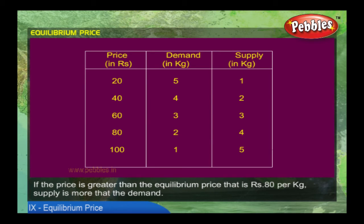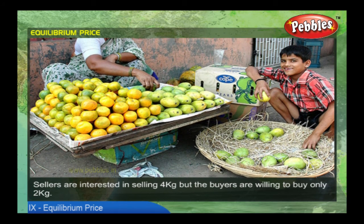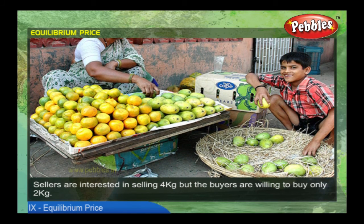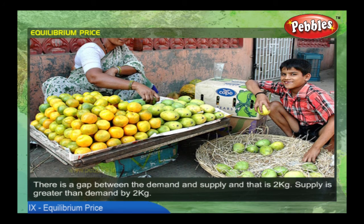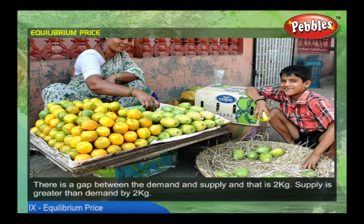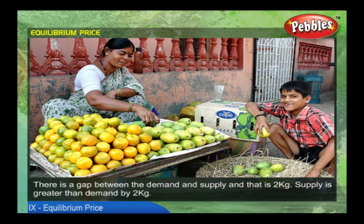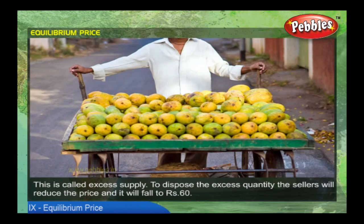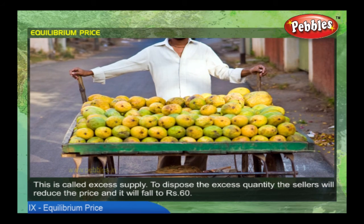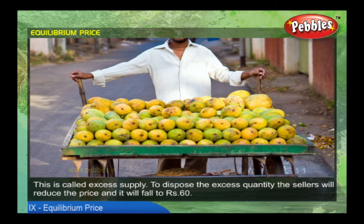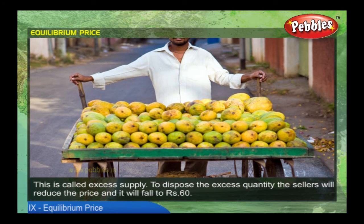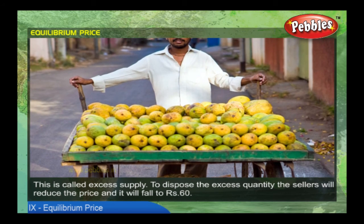If the price is greater than the equilibrium price — that is rupees 80 per kg — supply is more than the demand. Sellers are interested in selling 4 kgs, but buyers are willing to buy only 2 kgs. There is a gap between the demand and supply of 2 kgs. Supply is greater than demand by 2 kgs — this is called excess supply. To dispose of the excess quantity, sellers will reduce the price and it will fall to rupees 60.